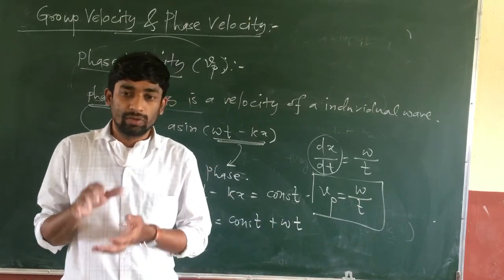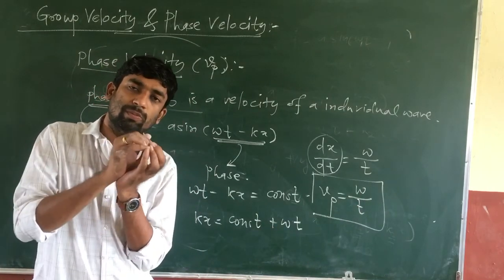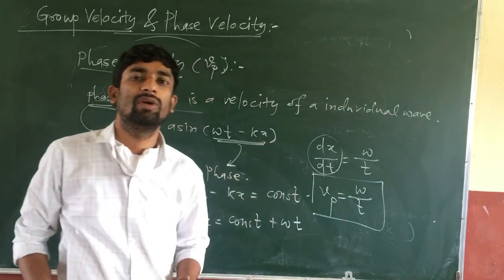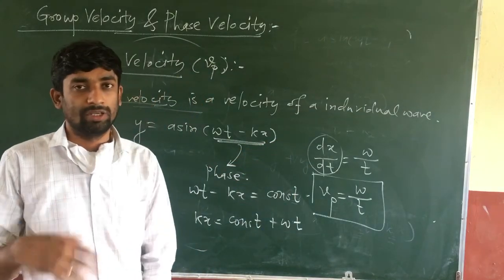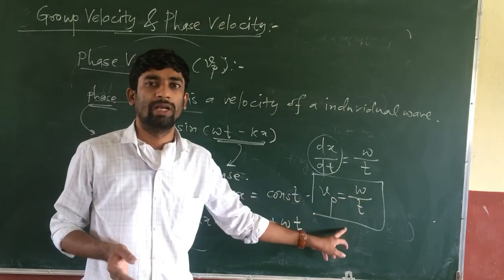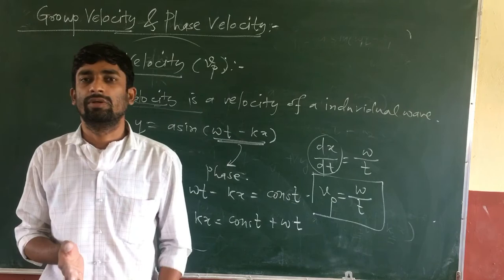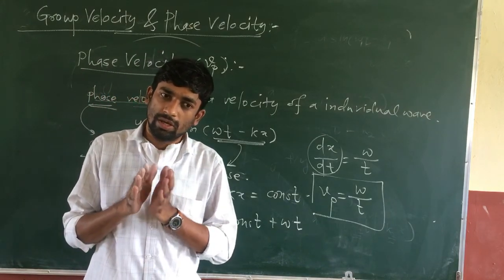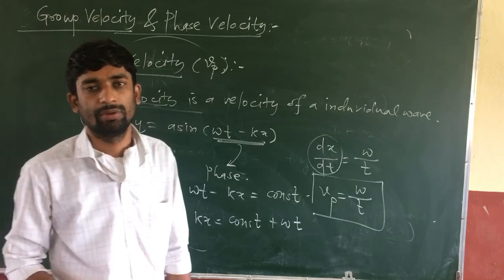In summary: group velocity is when two or more waves superimpose and their wave packet is transmitted — that is group velocity, given by dω/dk. Phase velocity is the velocity of the individual component wave, given by ω/k. In the next lecture, we are going to learn about the relation between group velocity and phase velocity. Thank you.